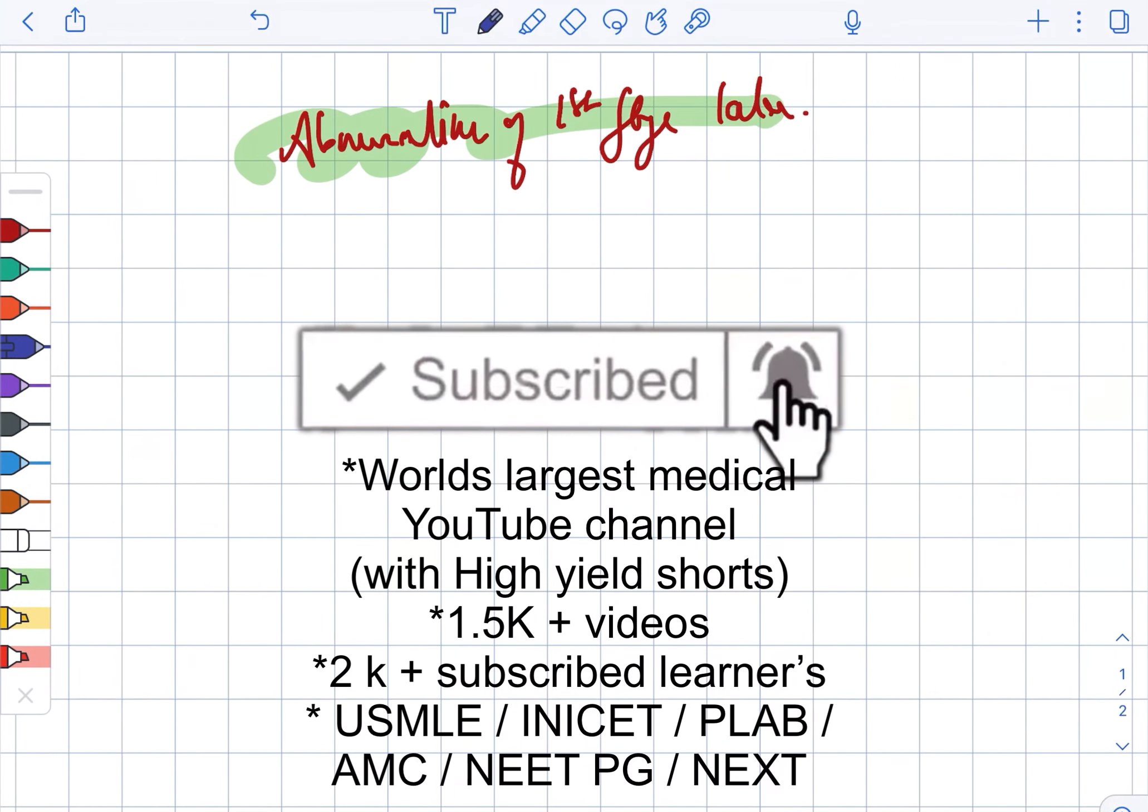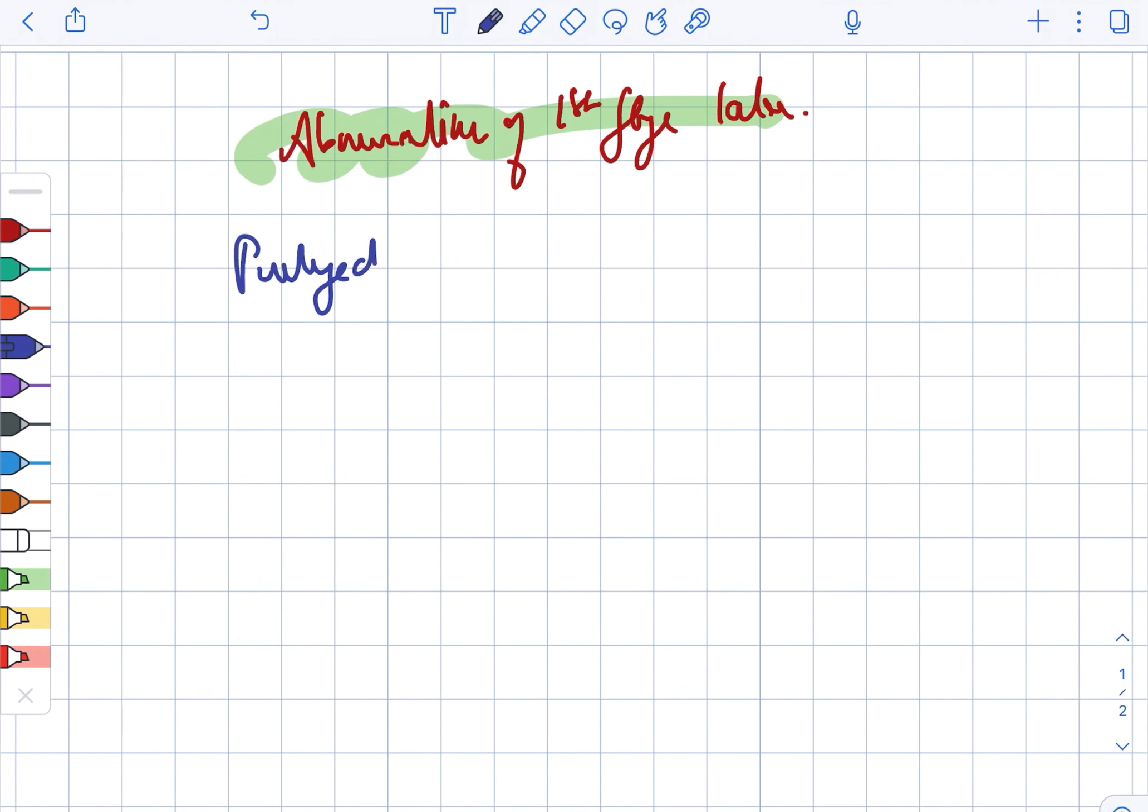Abnormality in the first stage of labor. Firstly, we have the prolonged latent phase. In case of the nullipara, it is greater than 20 hours. In case of the multipara, it is greater than 14 hours.